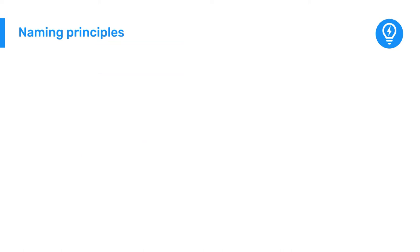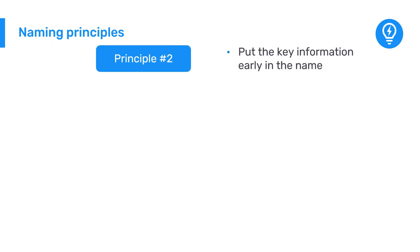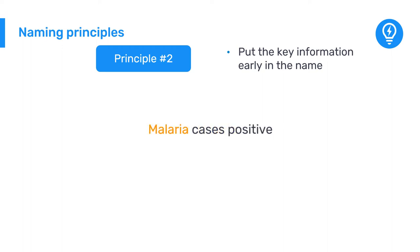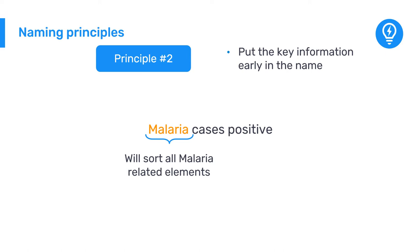The second principle is to put the key information early in the name. For example, we should say 'malaria cases positive' instead of 'positive malaria cases.' Putting malaria first will help us sort all of the malaria program related elements instead of grouping all the positive cases from different diseases together.